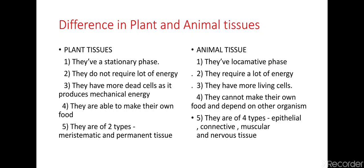Plant tissues have more dead cells, which provide mechanical strength, whereas animal tissues have more living cells. Plants are able to make their own food, whereas animals depend on other organisms. Plant tissues are mainly of two types: meristematic tissues and permanent tissues. Whereas animal tissues are of four types: epithelial, connective, muscular, and nervous tissues.